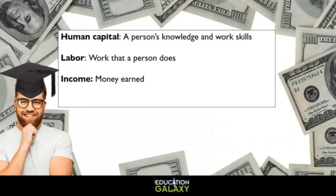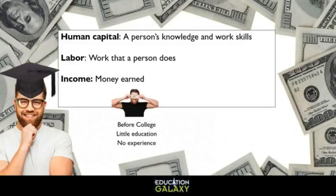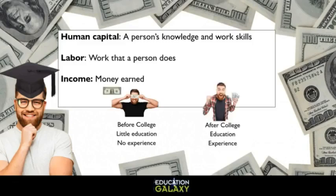When Sam first started working in high school, he had little education, no experience, and made very little. Upon graduating from college, Sam now had more education, a little more experience, and made much more money. The more experience he earns, the more money he can make.